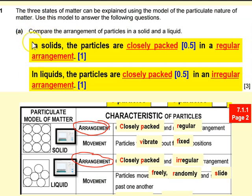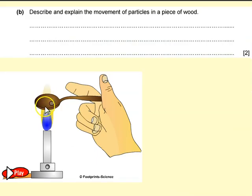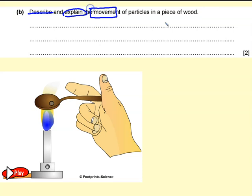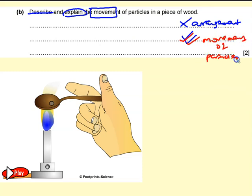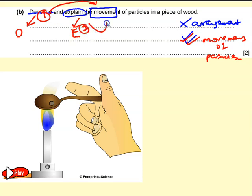Now let's go to question 1B. They ask you to describe and explain the movement of particles in a piece of wood. So now we should not be talking about arrangement — we should be talking about movement of particles. Your question has two parts: first, describe the movement; second, explain this movement.